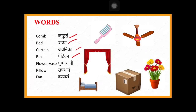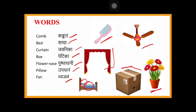Next we have: kankatam, shaya, javanika, petika, pushpadhani, upadhanam, viajanam. Kankatam, upadhanam (pillow), and viajanam (fan) come under neutral gender. Shaya, javanika, petika, and pushpadhani come under feminine gender. The major rule: short vowel ending — pullinga; long vowel ending — strilinga; 'ma' ending — neutral gender.